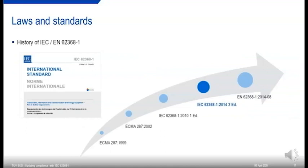A little bit of history. IEC 62368-1 has been around in development since 1999. There was a first edition published in 2010, and then in 2014 a second edition. And we actually now have a third edition published in 2018.